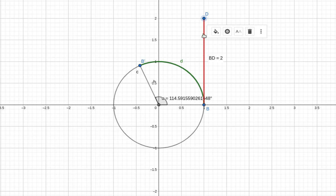So when this arc length is at 2, I mean when this segment length is at 2, then this arc length is also 2 and the angle measure is a little over 114.56 degrees.